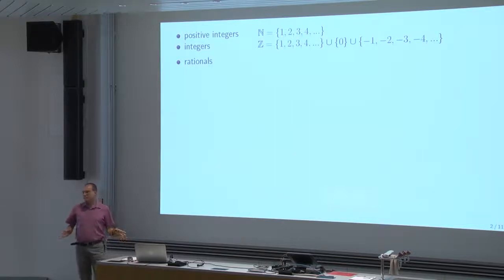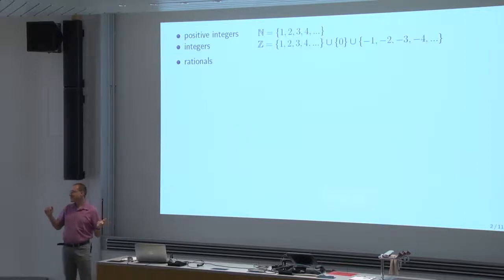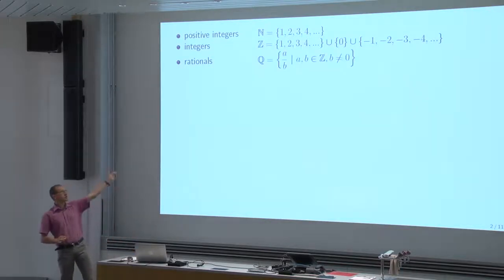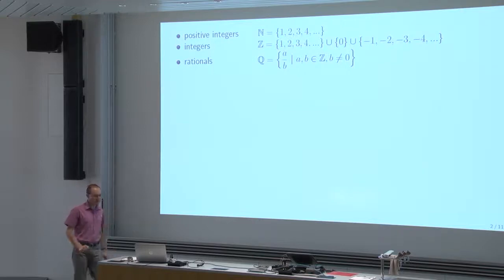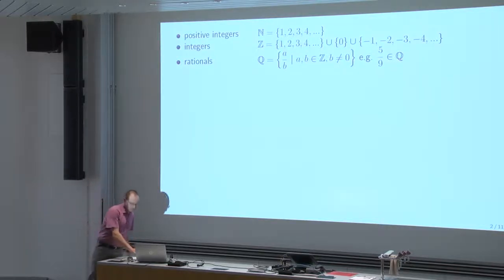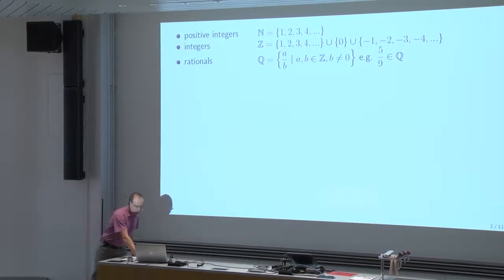What are the rational numbers? What is a rational number? They are also the ones that can be formed with divisions of integers. They are all the ones that can be formed by taking fractions of integers — fractions of two integers, numerator and denominator, where the denominator is not allowed to be 0. For example, 5 over 9 is a rational number. Any two integers, the fraction is a rational number.